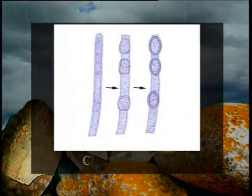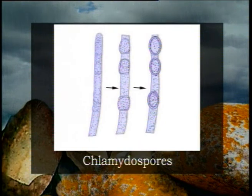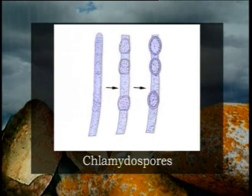Asexual reproduction takes place only by the formation of chlamydospores, which develop on the secondary mycelium at terminal or intercalary positions. These spores germinate to produce the dikaryotic mycelium. Sexual reproduction is the most common mode of reproduction in Agaricus and is solely involved in completing the life cycle.